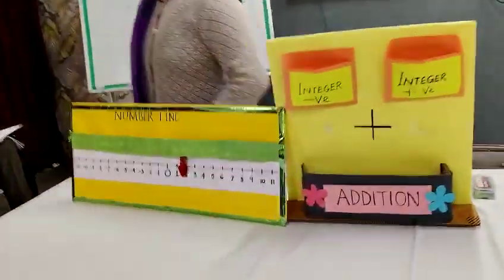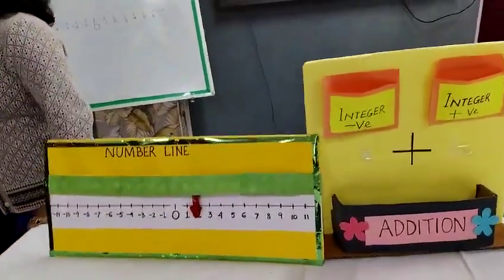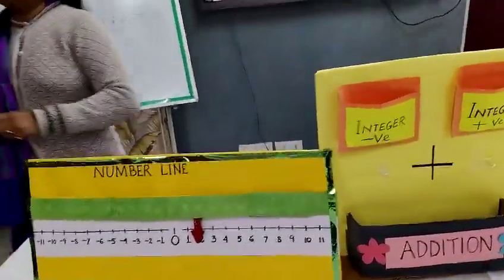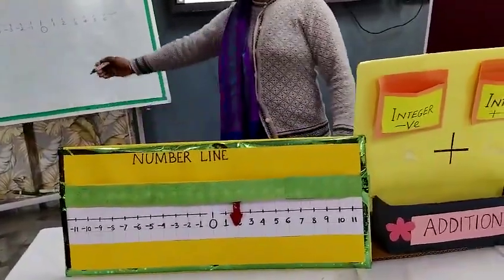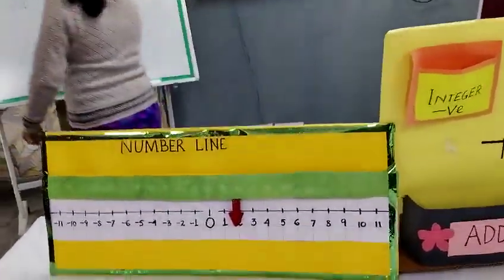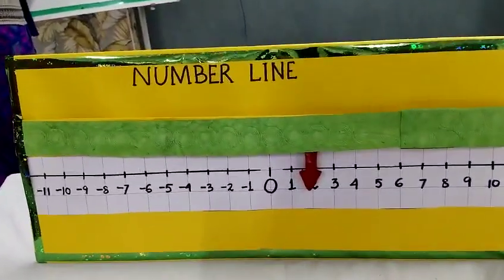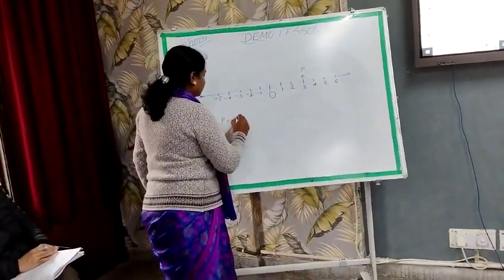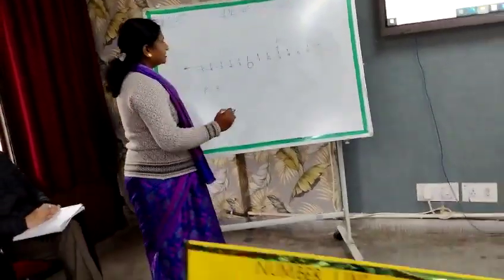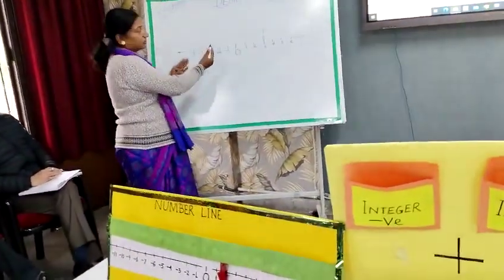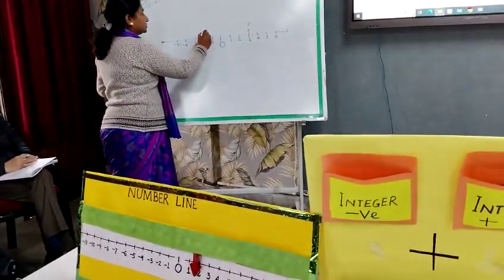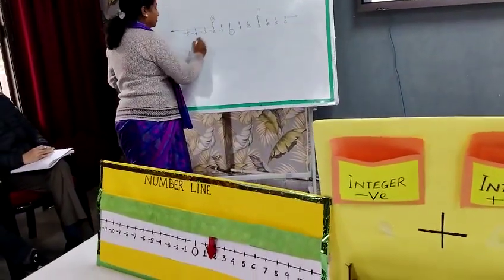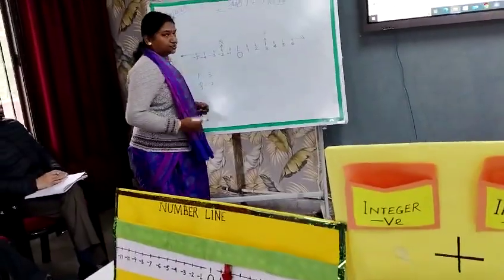If you want to represent a number on the number line — say you want to represent 3, positive 3 — you go to the right side, find 3, and mark this point as P, so P equals 3. Now if you say minus 2, you look on the negative side, find minus 2, mark this point as Q, and write Q equals minus 2.